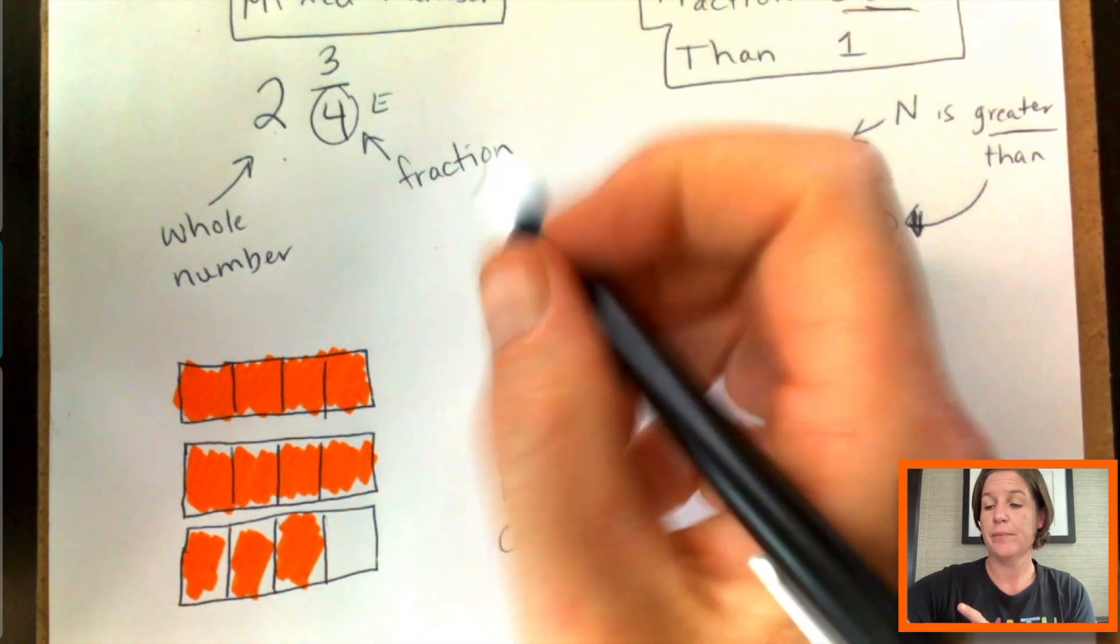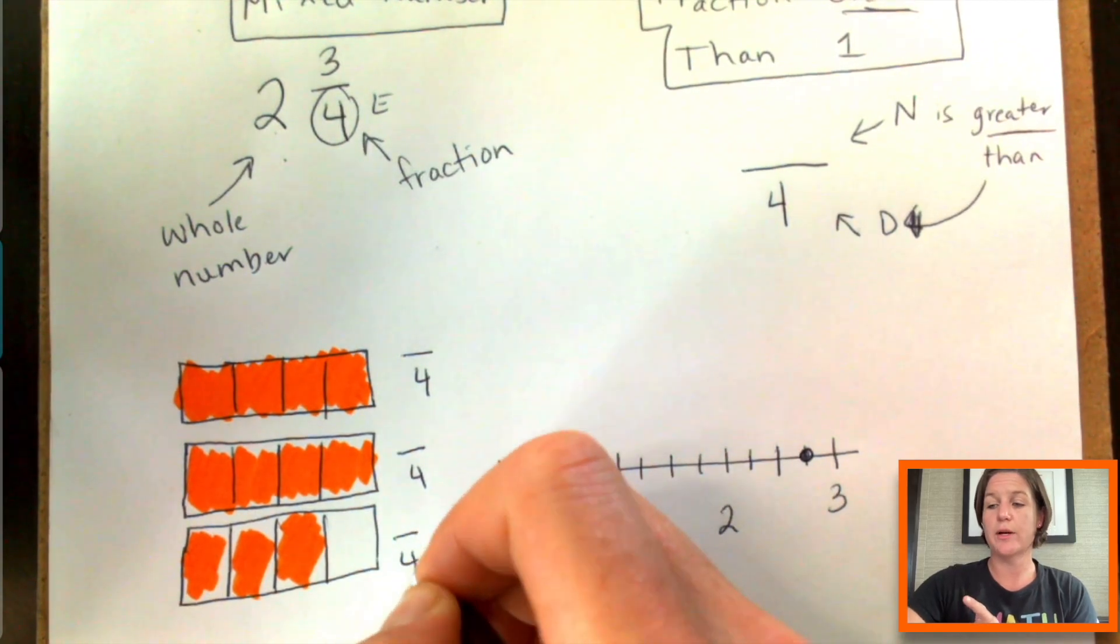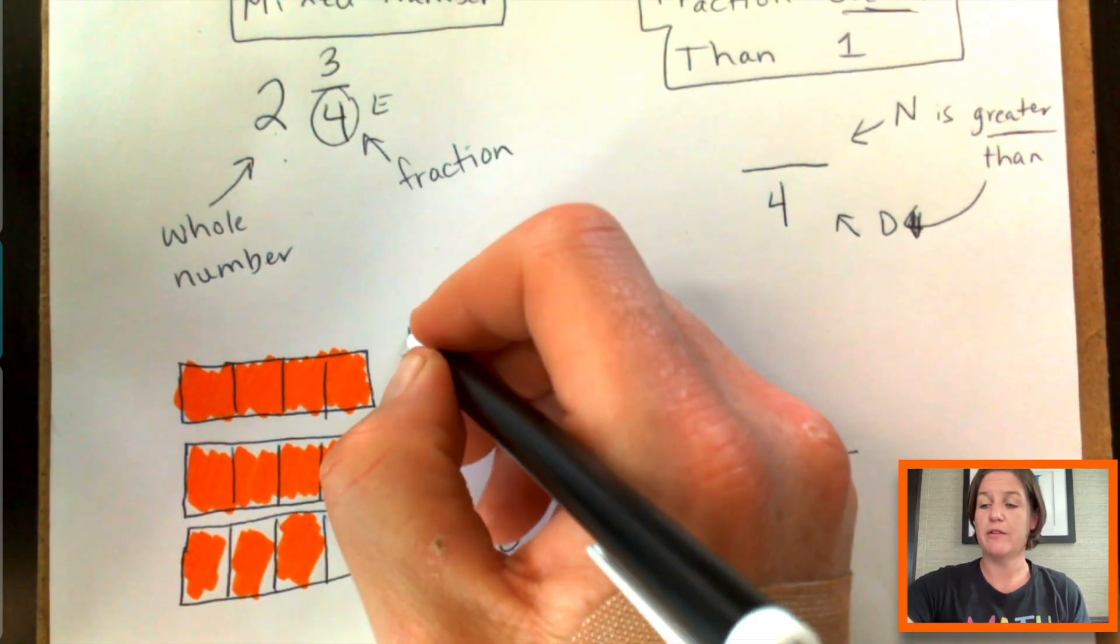But the equal parts are inside of each whole. There's four equal parts in here, there's four total parts in that whole, and there's four total parts in that whole.